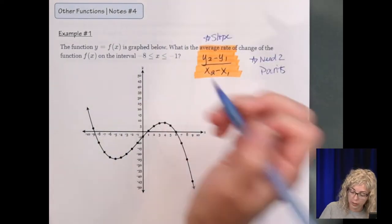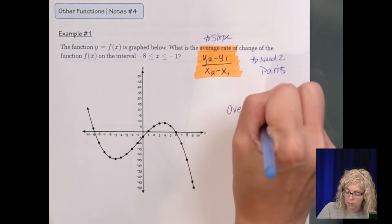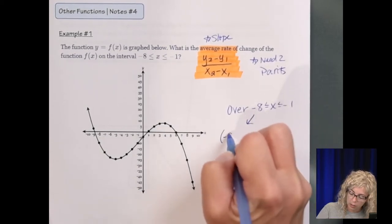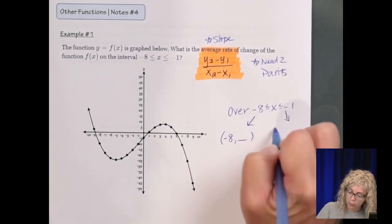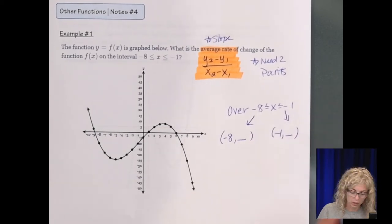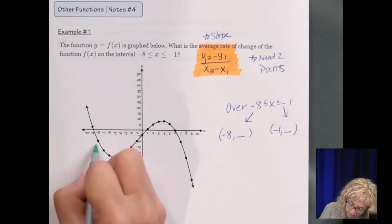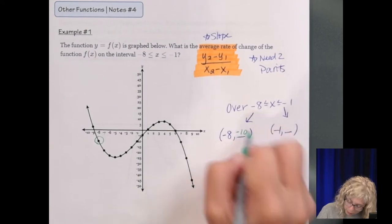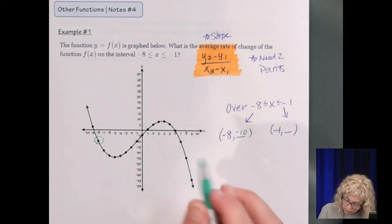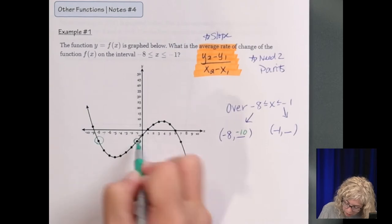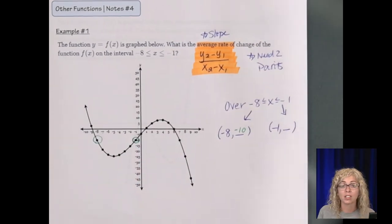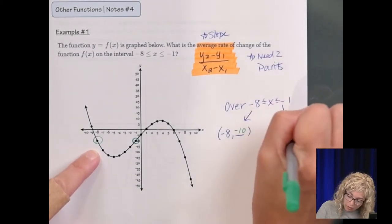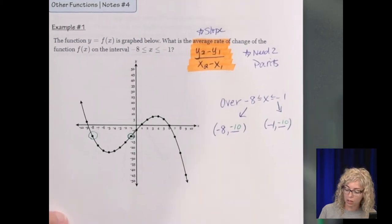So we go here to get our two points, over negative 8 less than or equal to x less than or equal to negative 1. So we're looking at the point where x is negative 8 and the point where x is negative 1. So let's find those two points. So negative 8, that's this point right here. So it's negative 8, negative 10. We look at the scale on the y-axis and when x is negative 1, that's this point right here which they have the same y value.